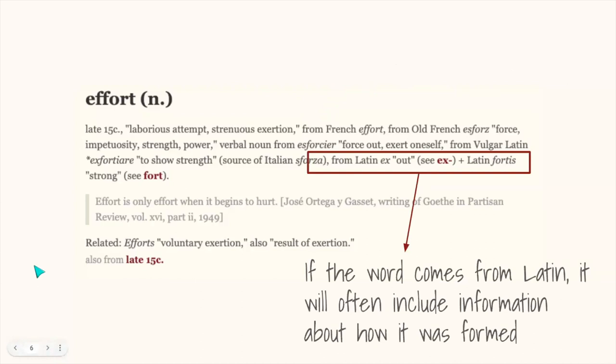If the word comes from Latin, it'll often include information about how this particular word is formed. We can see here that this word effort is made from the prefix ex. This is an example of an assimilated prefix. And the Latin word fortis, meaning strong.